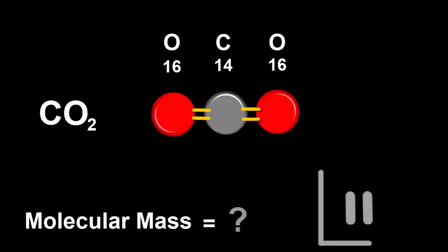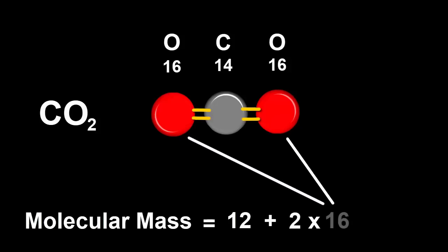How about carbon dioxide? It's made from one carbon atom with an atomic mass of 12, and two oxygen atoms, each with an atomic mass of 16. So its molecular mass is 44.